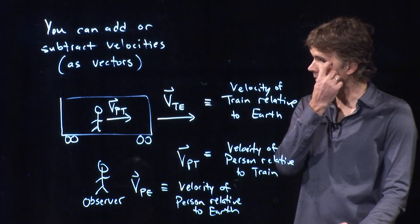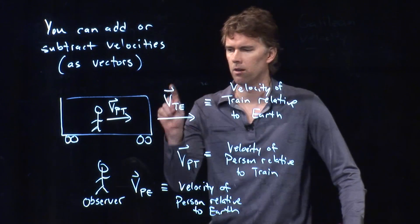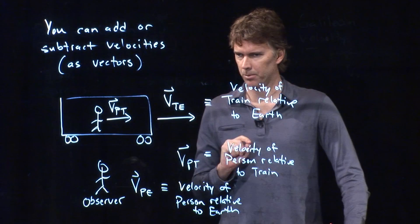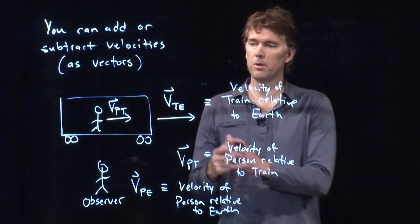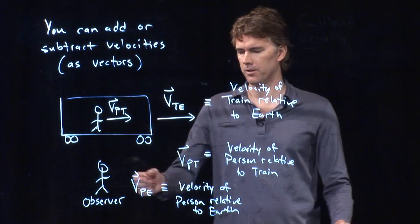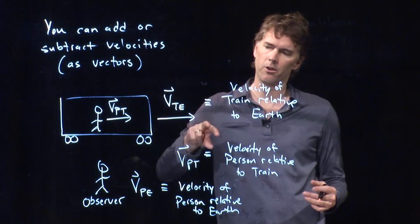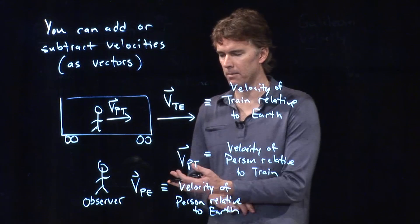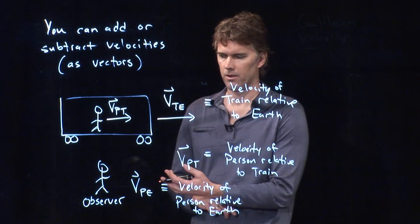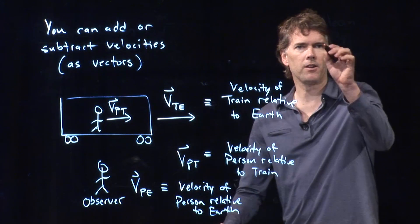So what we said was if the train's moving at 30 miles per hour and you're walking at 10 miles per hour, then we could be moving at 40 miles per hour relative to the Earth. But we could be walking the other way and then it would be 30 minus 10, which would be 20 miles per hour relative to the Earth.